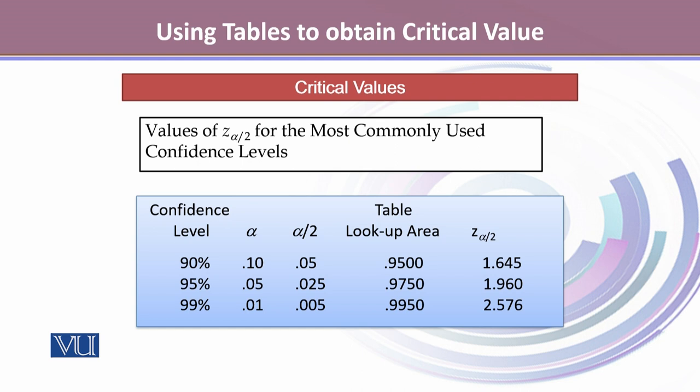In a confidence interval when we are looking at the two tails, or in testing of hypothesis when we are looking at the two-tailed test, we look for alpha by 2.